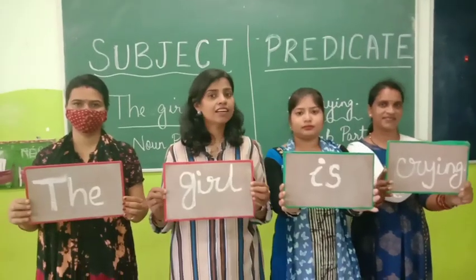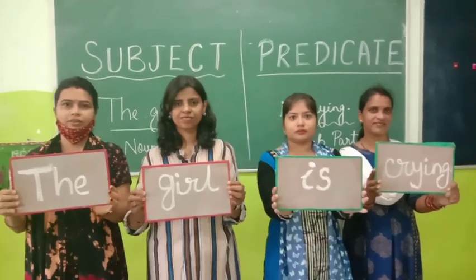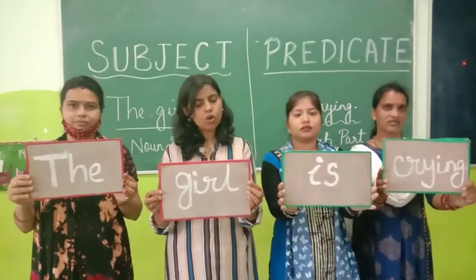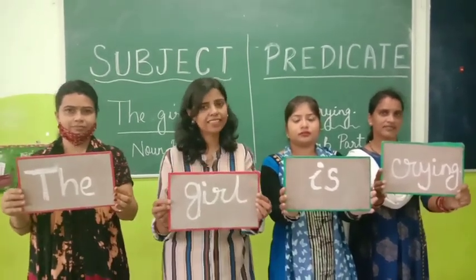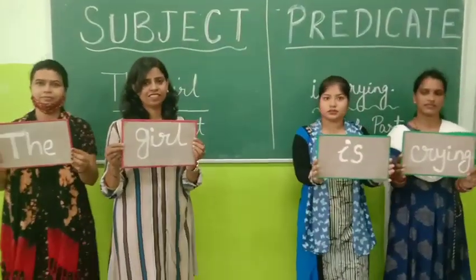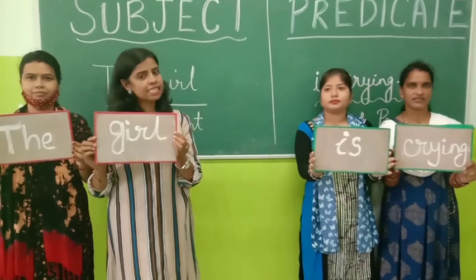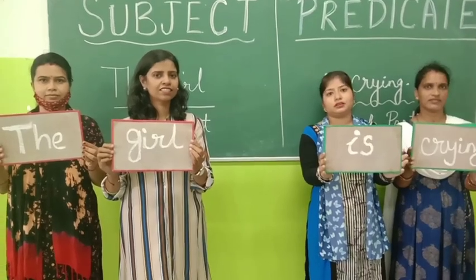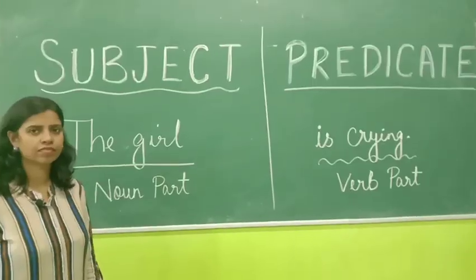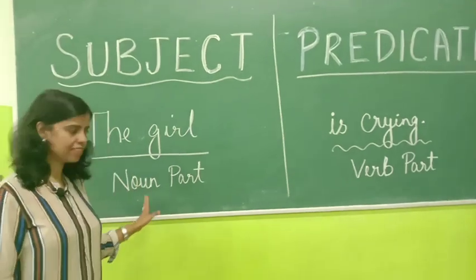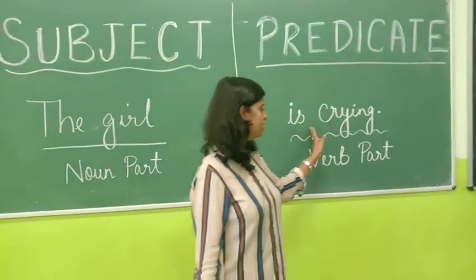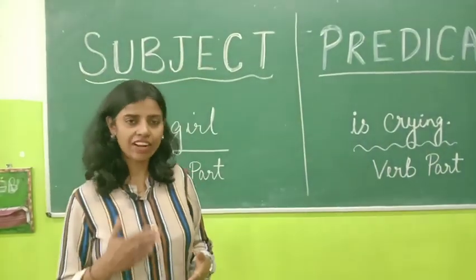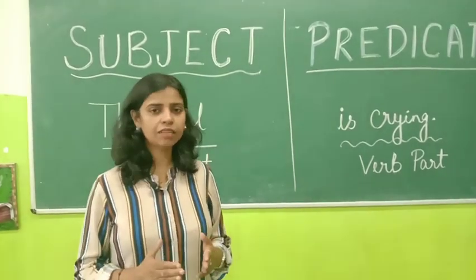Here is another example: The girl is crying. Now we are going to divide it into subject and predicate. The girl is the subject — the noun part. And 'is crying' is the predicate — the verb part. So, the girl is the subject, it is the noun part, and the predicate is 'is crying,' the verb part.